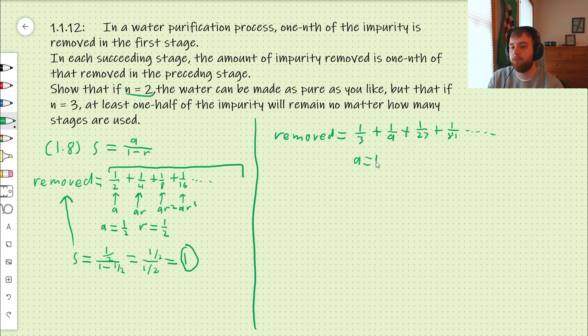So, our a is 1 third, as we can see from the first term. Then we're multiplying it by an additional third each time. So, our r is also 1 third.